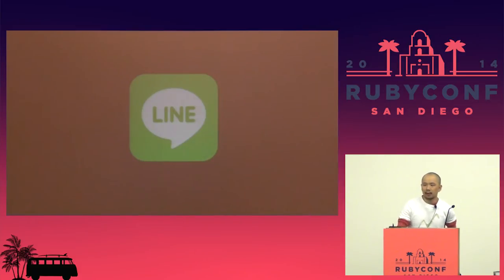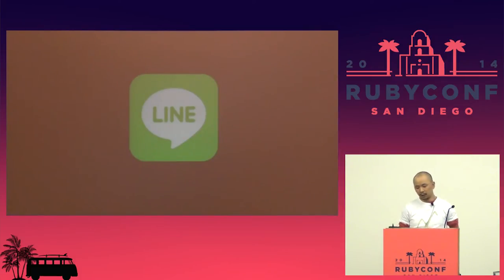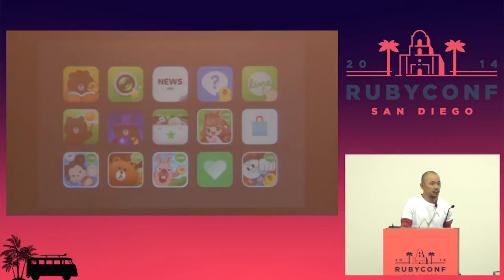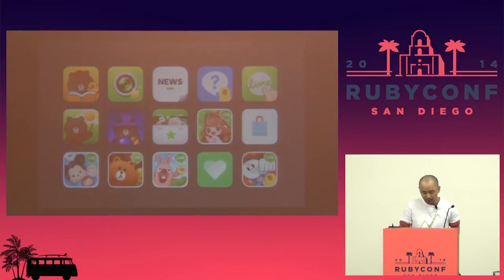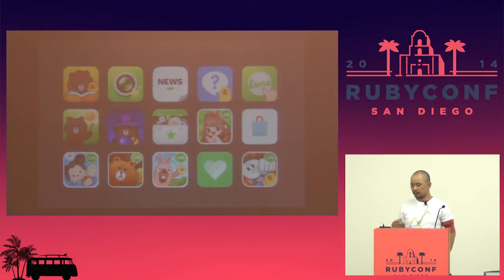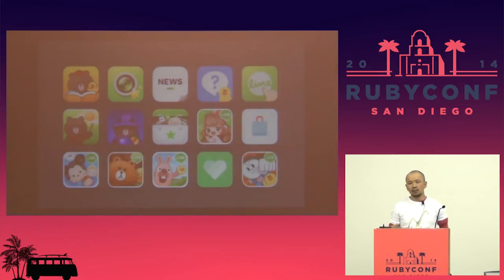LINE has about 130 million users worldwide, mainly in Asia, South America, and part of Europe. Moreover, we have many sub-services and online platforms, like Japanese manga publishing, a camera app, news, Q&A service, weather news, and many games. So we must handle a huge amount of logs and metrics, and at the same time, we must handle various kinds of metrics and logs.